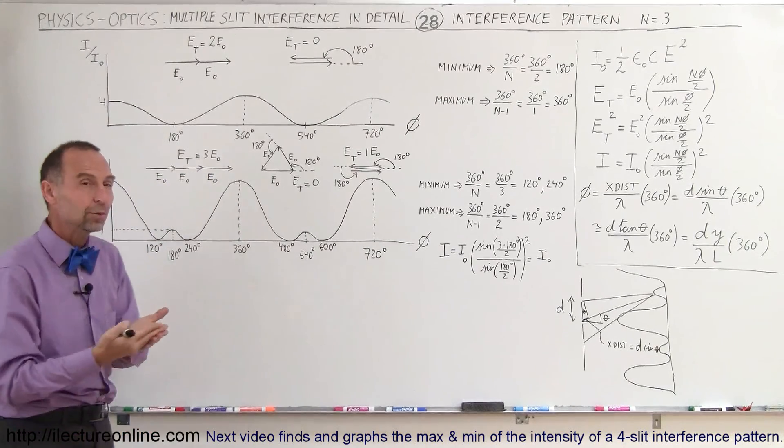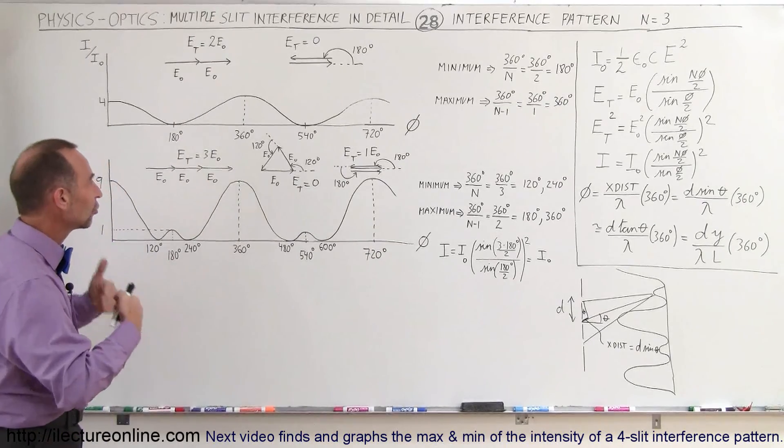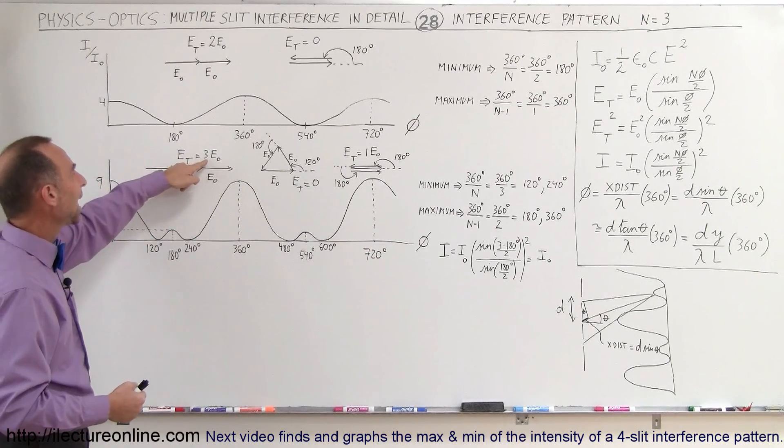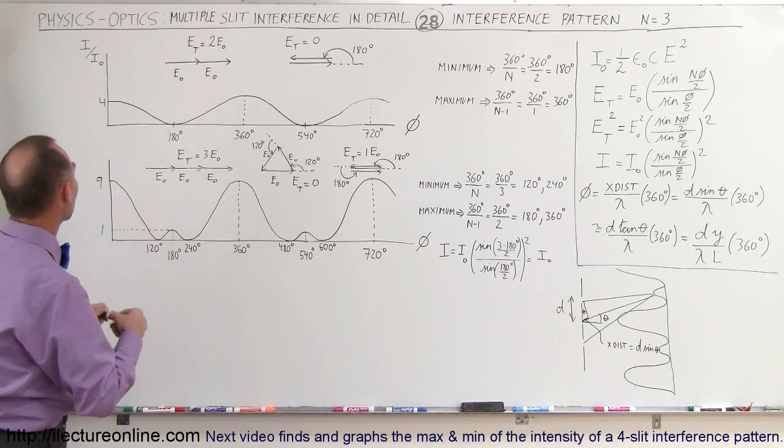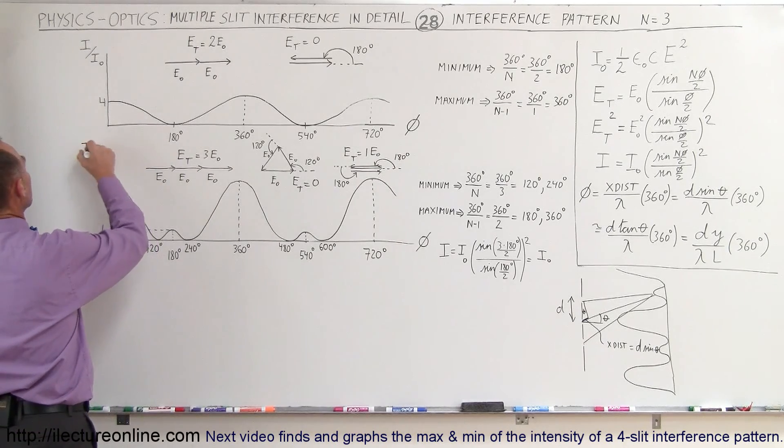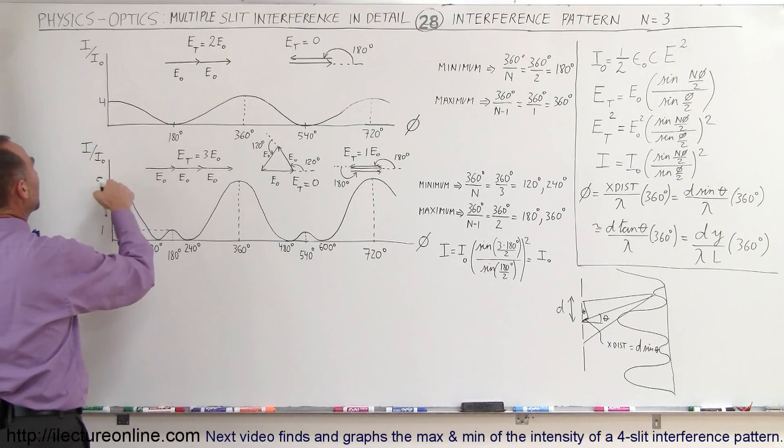And since the intensity is equal to the electric field oscillation squared, the intensity then would be nine times the intensity of a single phase. So that's why the ratio, I divided by I sub not, in this case, will be equal to nine.